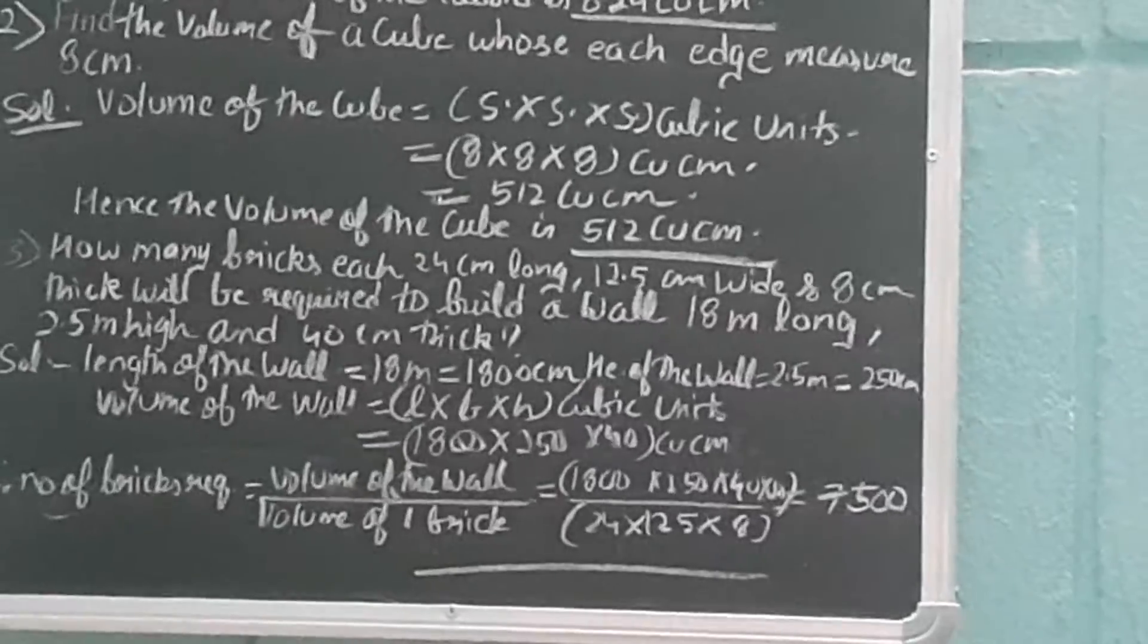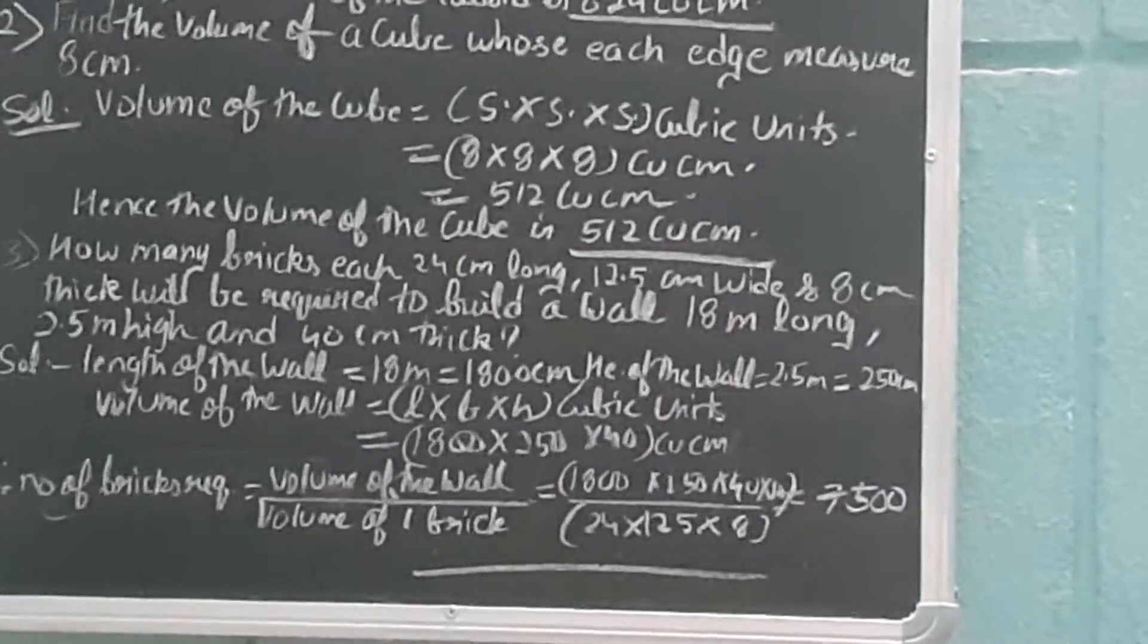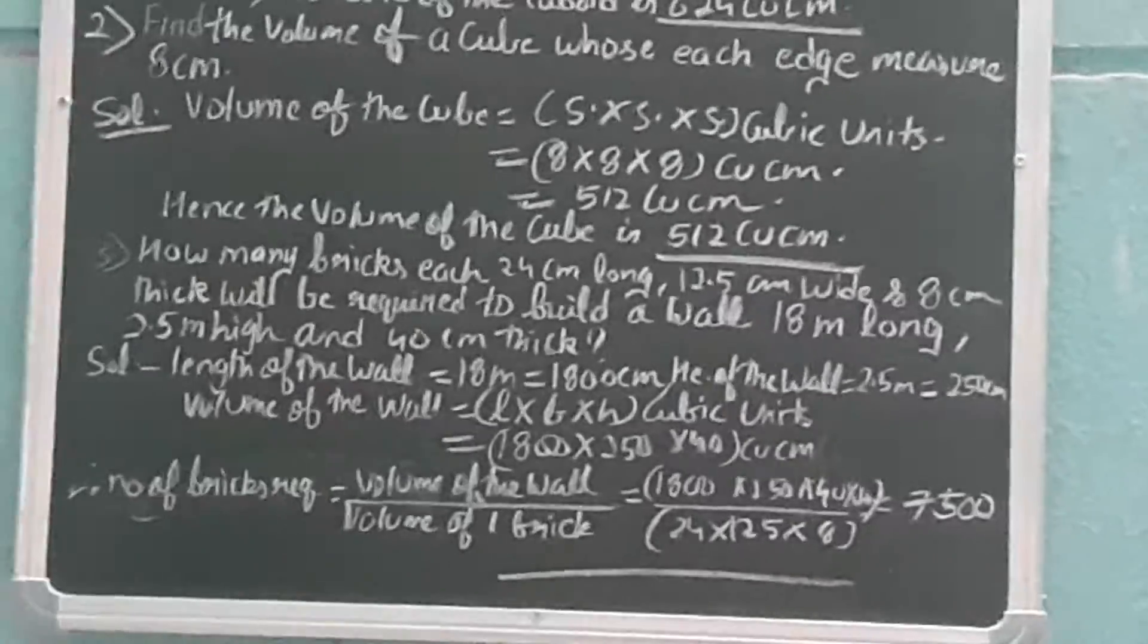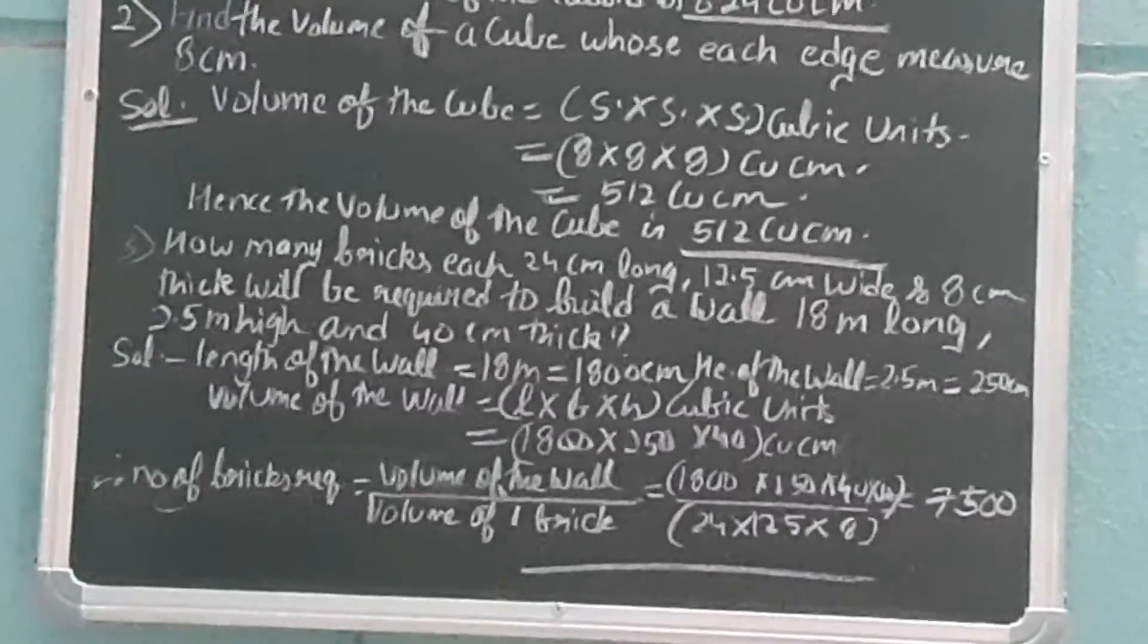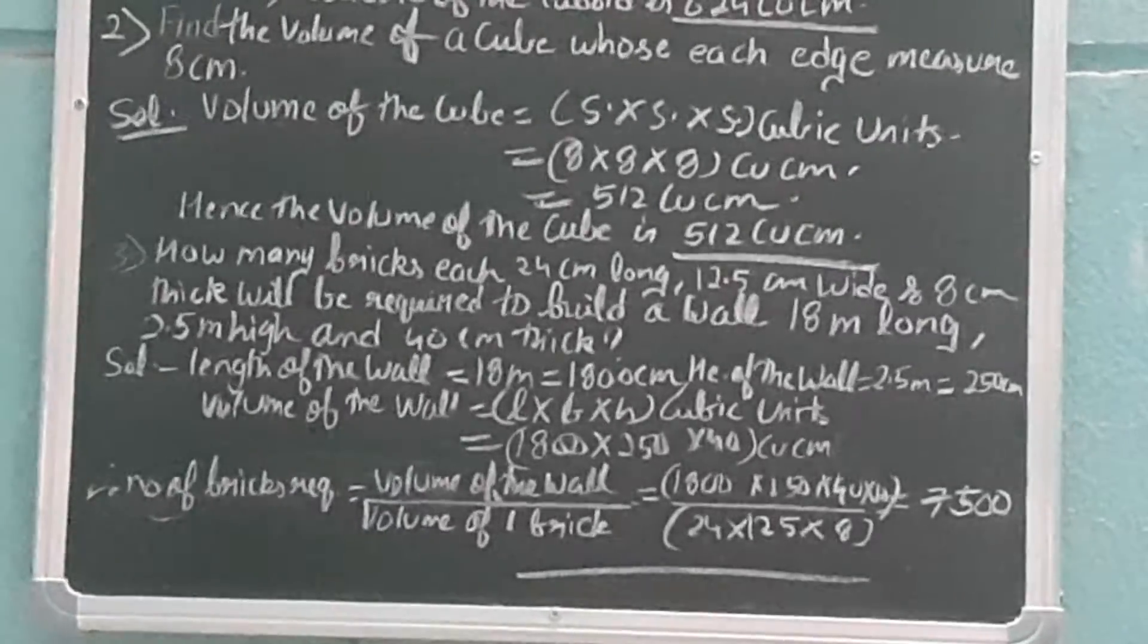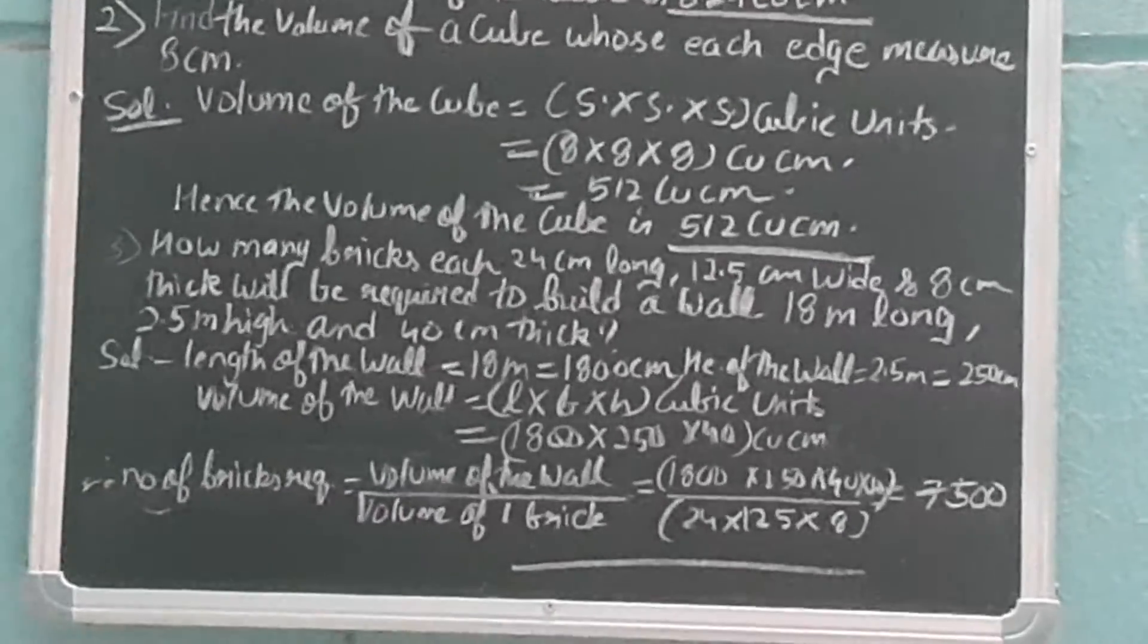So after cutting and multiplying, we'll get 7500. So the number of bricks required to build that wall is 7500. So this is the end of the vlog.